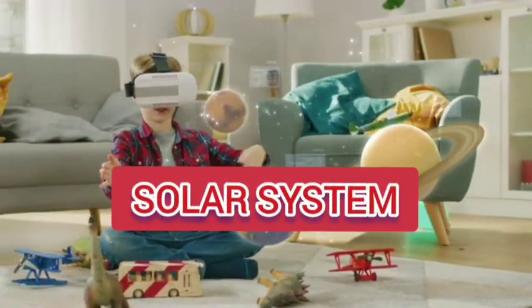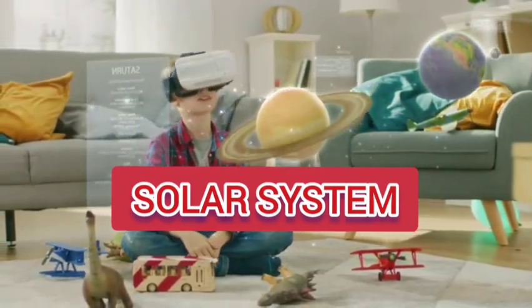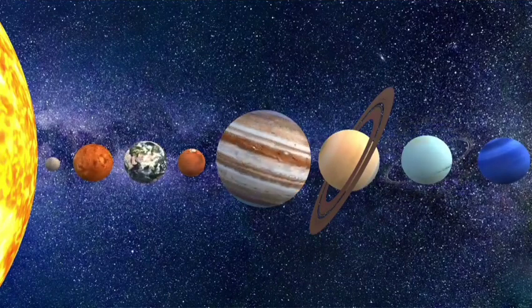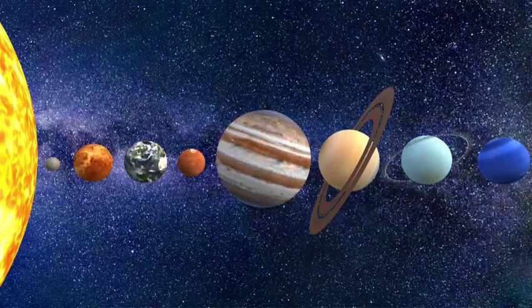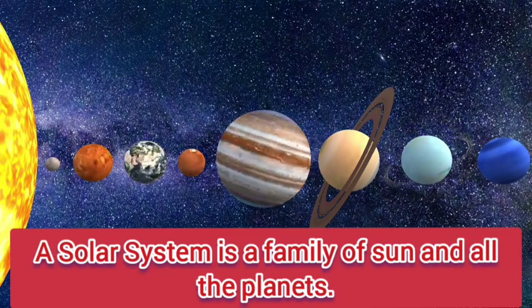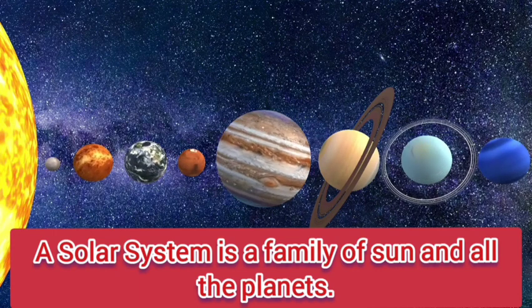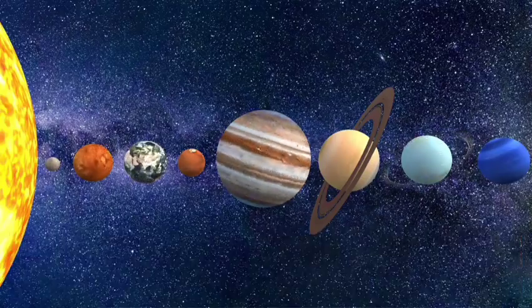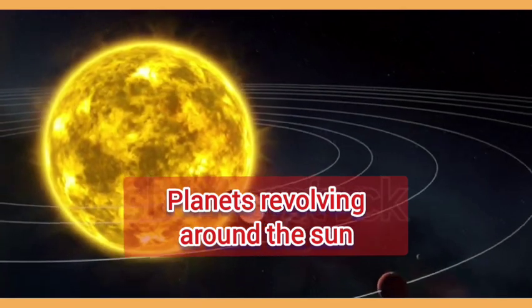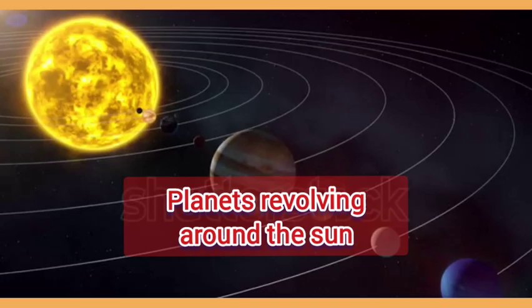Let's start with solar system. Kids, do you know? A solar system is a family of sun and all the planets. Very good. The planets of the solar system are revolving around the sun in definite orbits.